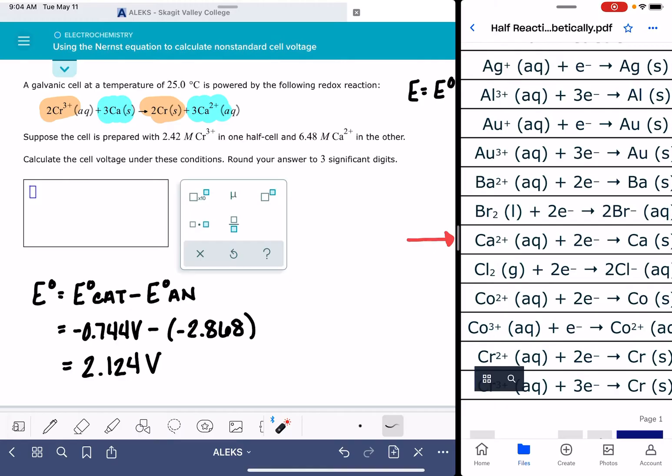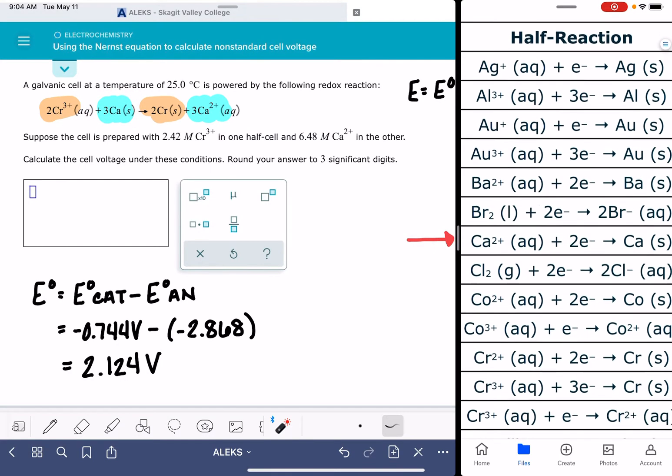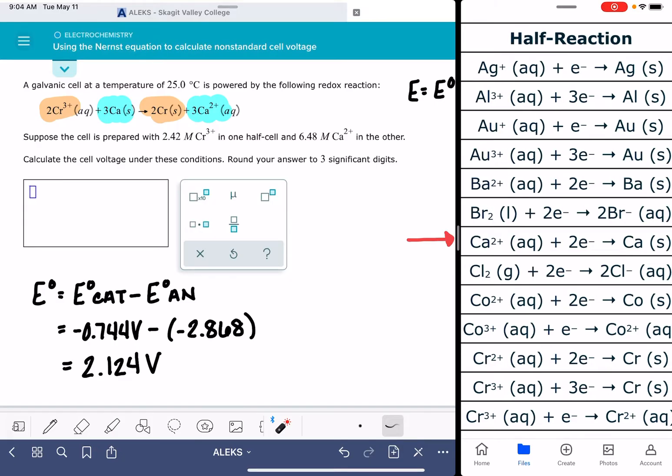So since we're already on the calcium reaction, we'll just focus on that. In this calcium reaction, we can see that there are two electrons that are being exchanged in this particular reaction. But before we just drop two right into the equation, let's double check and make sure the stoichiometric coefficients are the same for this equation as they are for our overall equation.